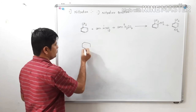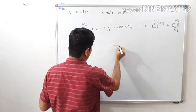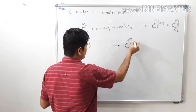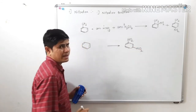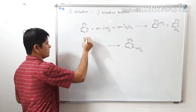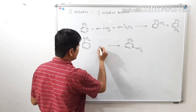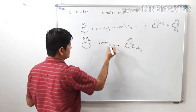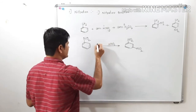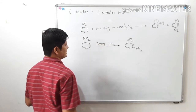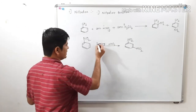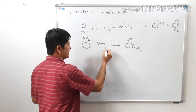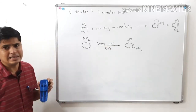Next, if we have to prepare meta-dinitrobenzene (1,3-dinitrobenzene), we take nitrobenzene as the starting material and react it with fuming nitric acid — which is more concentrated, stronger nitric acid — at 80°C, to get meta-dinitrobenzene. The nitro group already present is meta-directing, hence the second nitro group goes to the meta position.